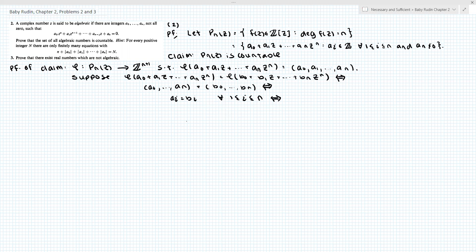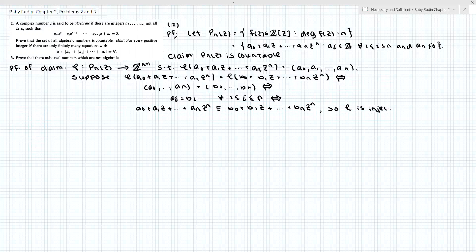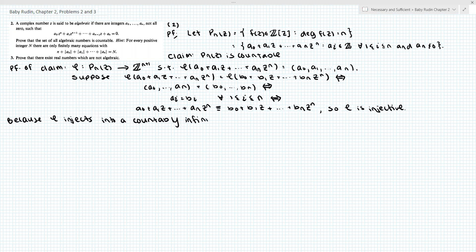And this is if and only if the polynomial a_0 plus a_1 z plus dot dot dot a_n z to the n is identical to b_0 plus b_1 z plus b_n z to the n. So what this has told us is that P_n of z injects into a countably infinite set. So phi is injective, and because phi injects into a countably infinite set, P_n is at most countable.